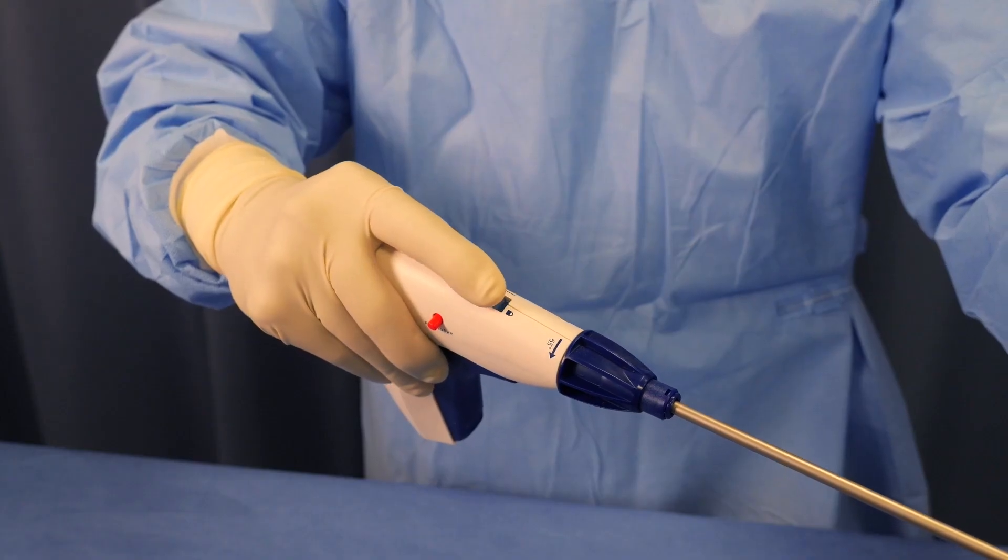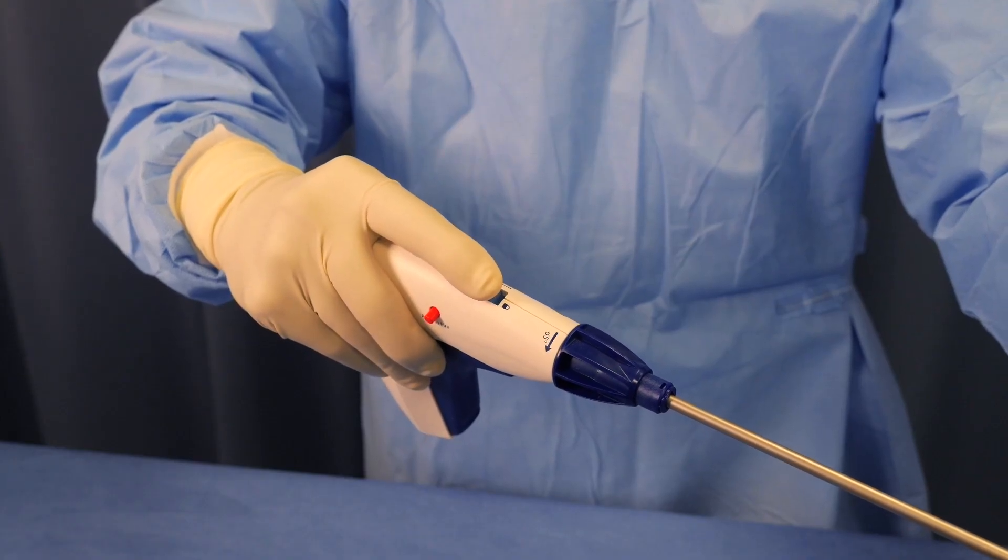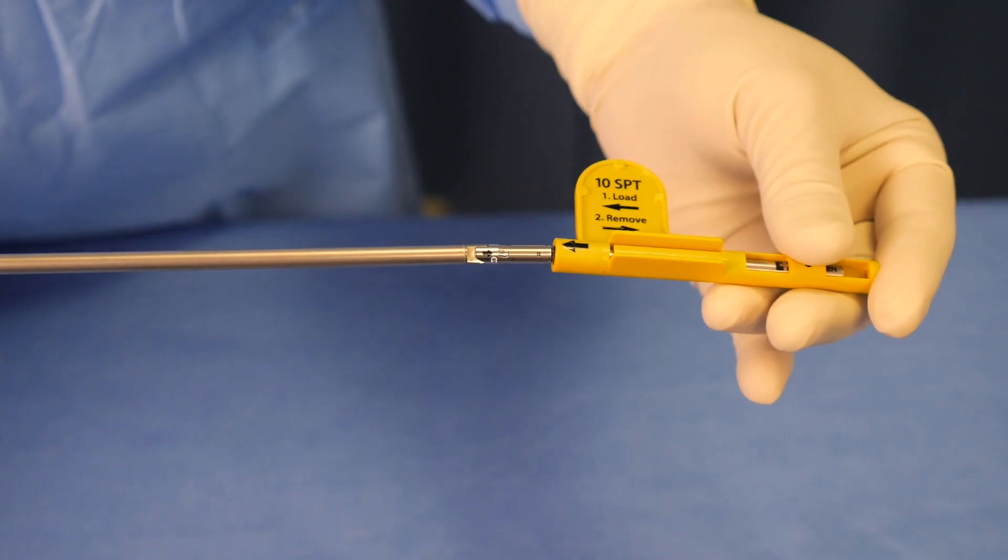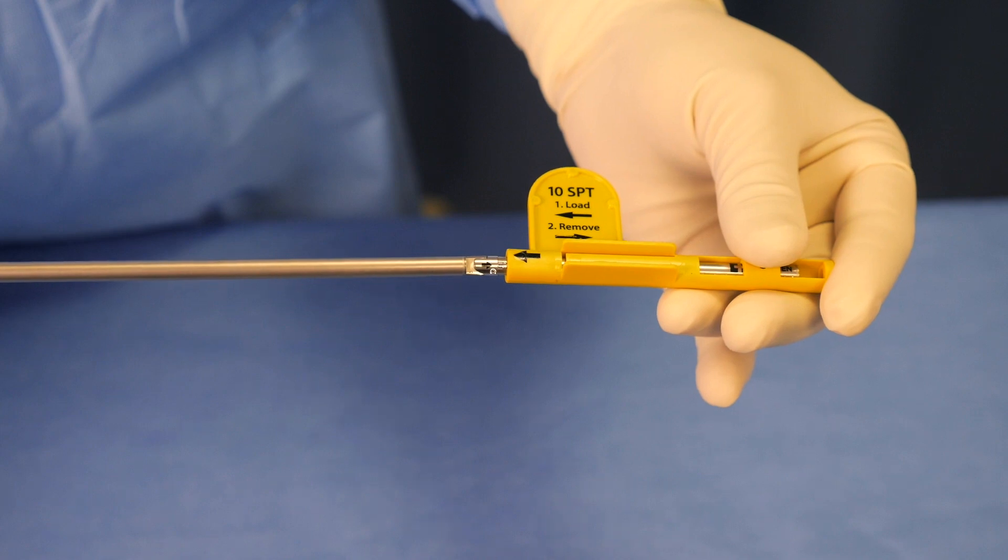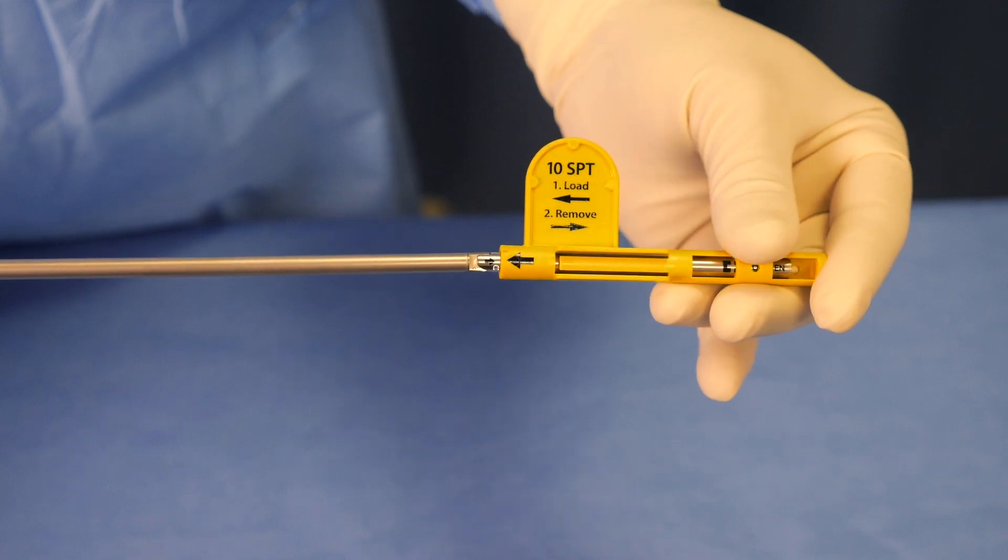To load the Reliatak Device, pull and hold the blue lock switch button located on top of the instrument in the back position. Insert the pin located at the distal end of the shaft into the reload. Ensure that the arrow on the shaft is aligned with the arrow on the shipping wedge. Push the reload onto the distal end of the shaft until the two arrows meet.